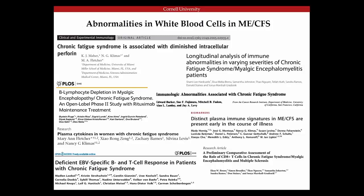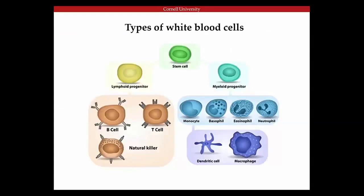There are a number of studies showing different subsets of white blood cells at different abundances. This evidence is extremely strong that there's something wrong in white blood cells. One indirect piece of evidence is the very important rituximab studies, which indicate that if you deplete B cells, a subset of patients improve. That also indicates there's something going on with white blood cells. The types most studies have dealt with are B cells — the antibody-producing cells — T cells, and natural killer cells. Those are the ones I'm going to concentrate on.